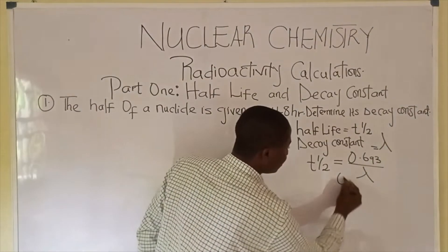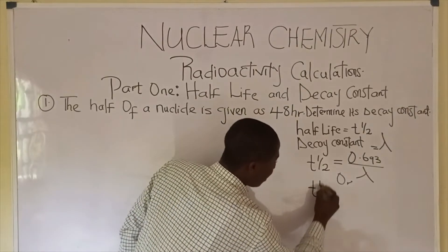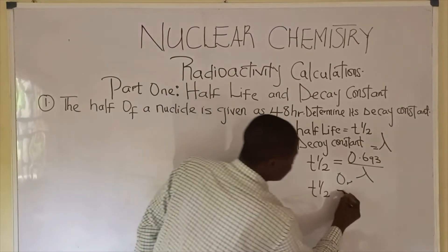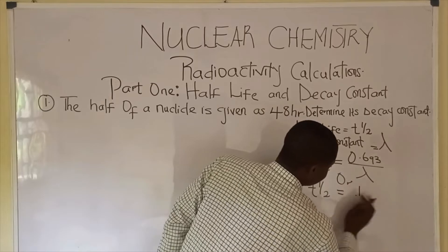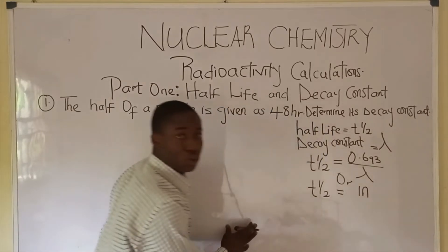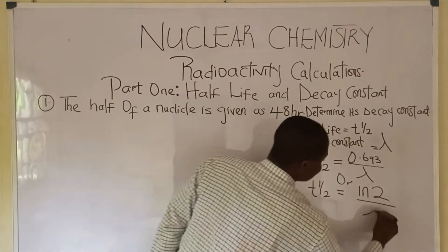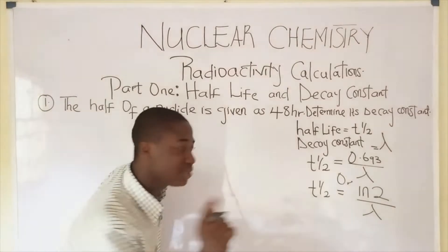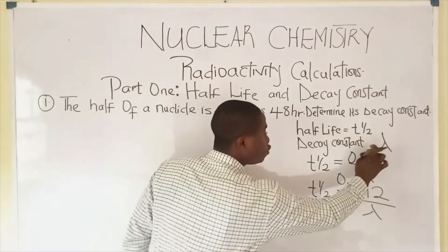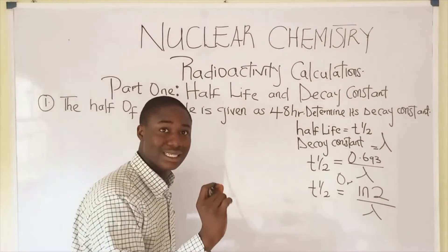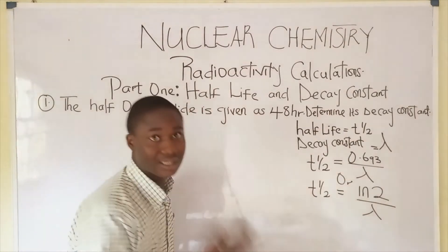If the formula is not written like this, half-life is equal to ln 2 over decay constant. That means ln 2, when you press it in your calculator, gives you 0.693. So basically, you can use either of these formulas.